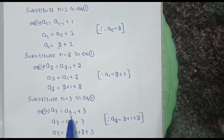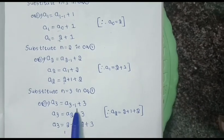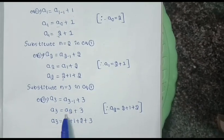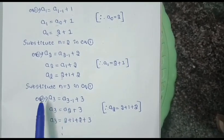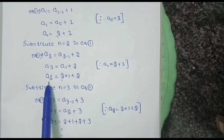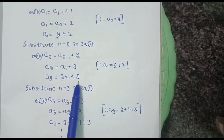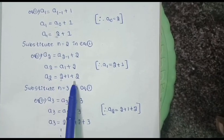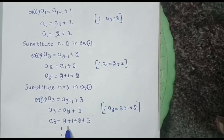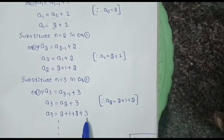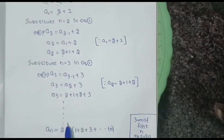Similarly, substituting n = 3 in equation 1 gives a_3 = a_{3-1} + 3, and a_{3-1} = a_2. We already calculated a_2 = 2 + 1 + 2, so substituting gives a_3 = 2 + 1 + 2 + 3, and so on.